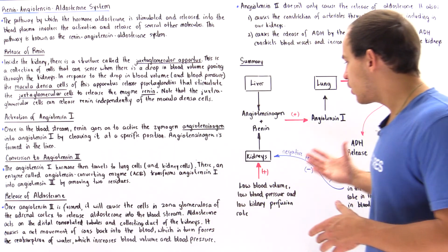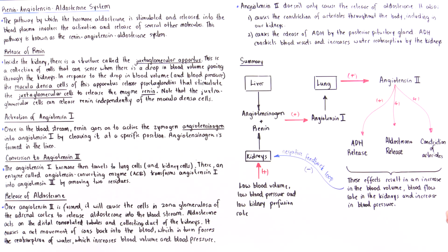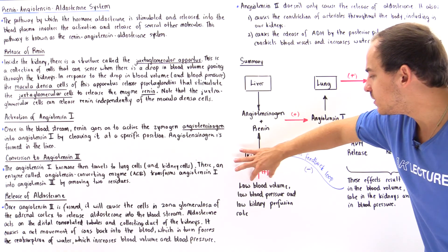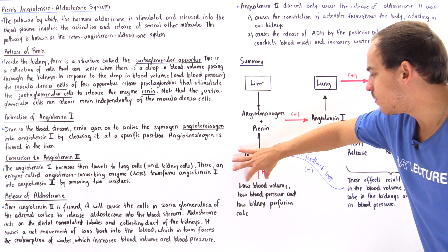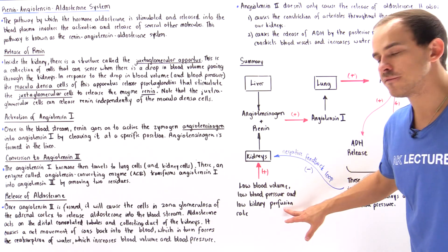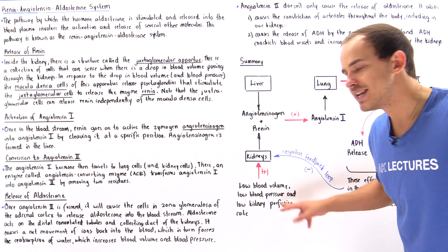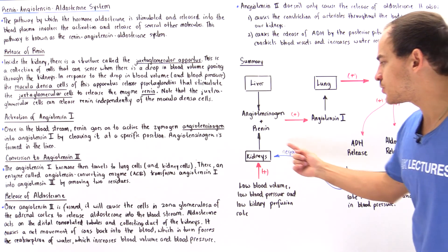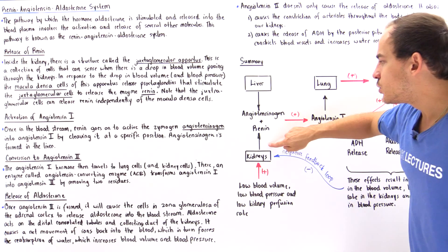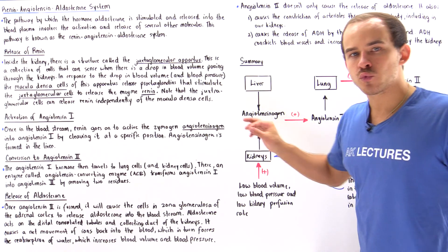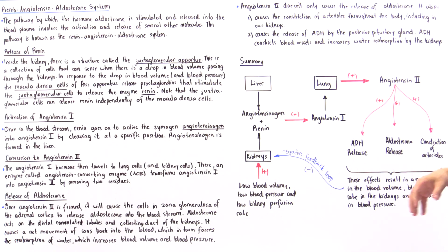As shown in the following diagram, low blood volume, low blood pressure, and a low kidney perfusion rate all positively stimulate the kidneys to produce and release the renin enzyme into our bloodstream.